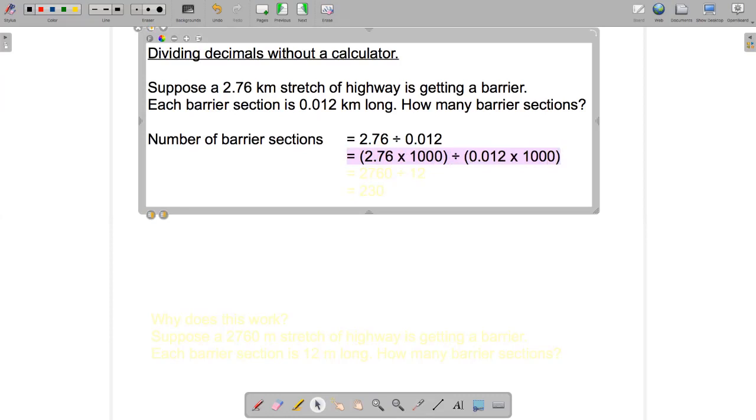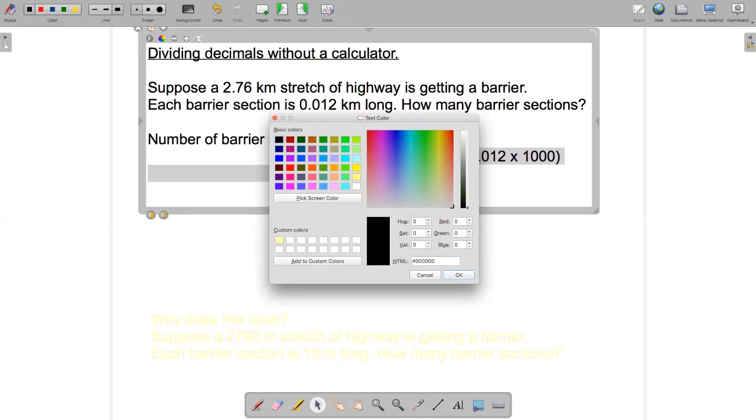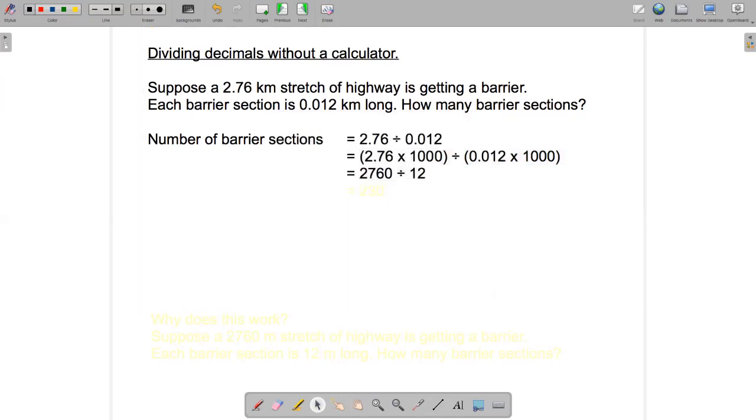So 2.76 times 1,000 and 0.012 times 1,000. 2.76 times 1,000 is 2,760, and 0.012 times 1,000 is 12. So what we've done here is we've changed our division problem with these decimal numbers that are hard to deal with into an equivalent division problem with whole numbers that's easy to deal with.